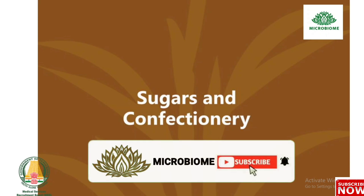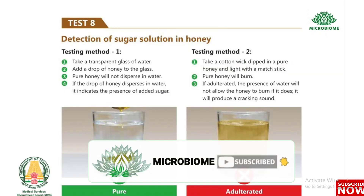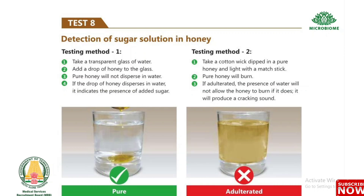Next, sugars and confectionery. Test 8: Detection of sugar solution in honey. Method 1: Take a transparent glass of water and add a drop of honey. Pure honey will not disperse in water; if the drop disperses, it indicates the presence of added sugar. Method 2: Take a cotton wick, dip it in honey, and light it with a matchstick. Pure honey will burn. If adulterated, the presence of water will prevent burning, or it will produce a crackling sound.